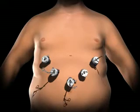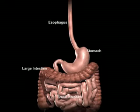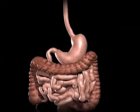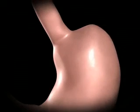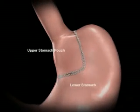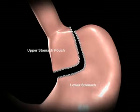The surgeon examines the abdominal cavity using a laparoscope or video camera. A small stomach pouch is created using a stapling device. This smaller stomach pouch restricts the amount of food that can be eaten before feeling full.